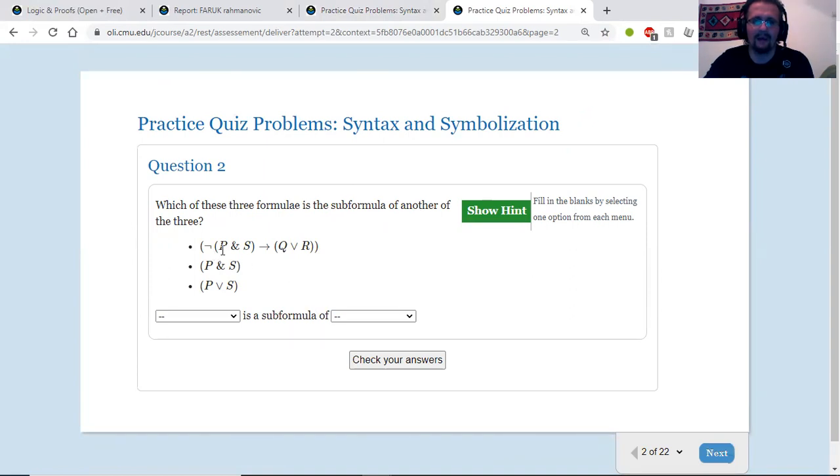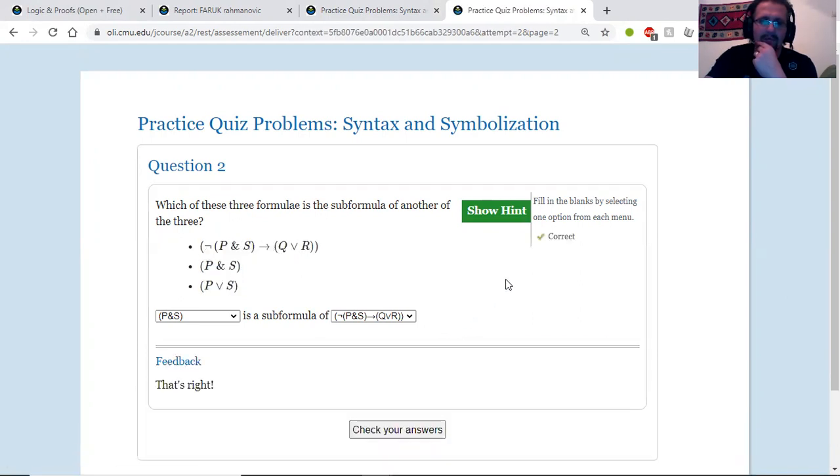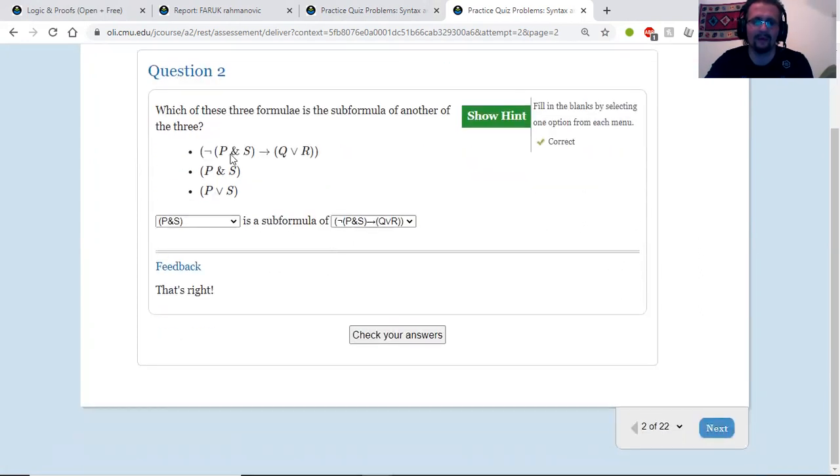So we have the sub-formula of not p and s then q or r. So I'm guessing that p and s might be a sub-formula. Let's take a look here quick. That is correct, because you can break down the not p and s into a not and then the p and s part. All right, so that's pretty straightforward.